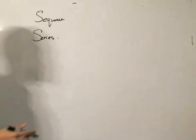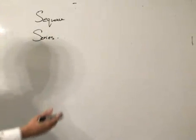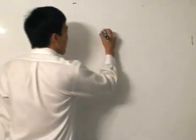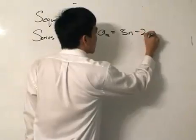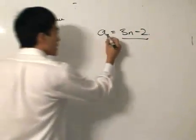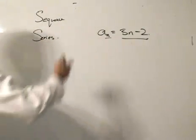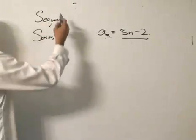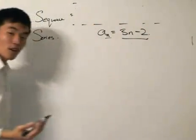Formally, a sequence is a function that assigns a value to a certain integer. Usually that function is defined as a(n) — let's just say 3n take away 2. This would be the value assigned to the integer n. This integer also tells us about the term of the sequence, so a sequence basically gives us a line of numbers all corresponding to this function.